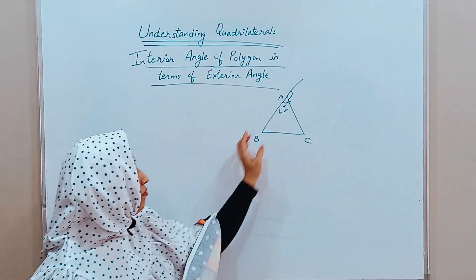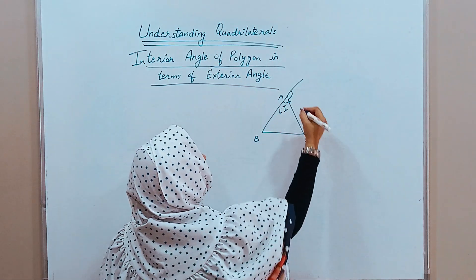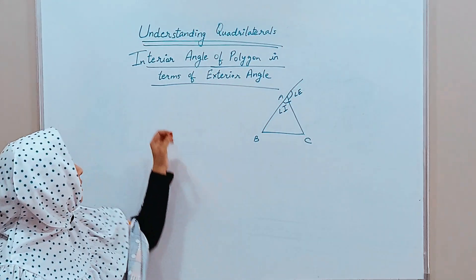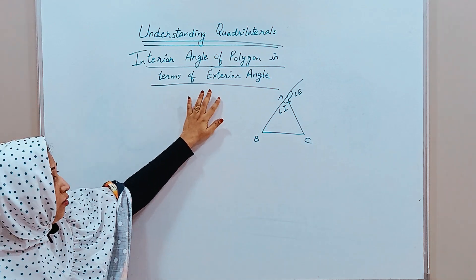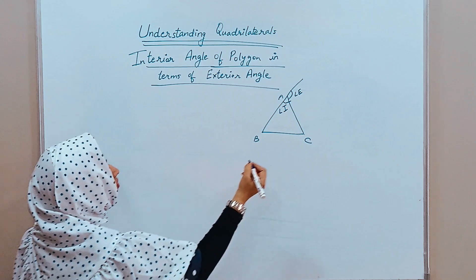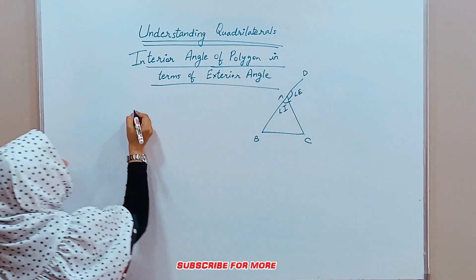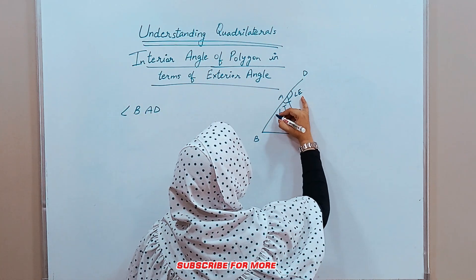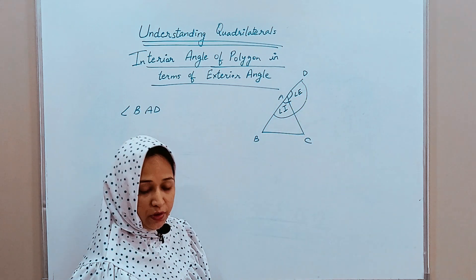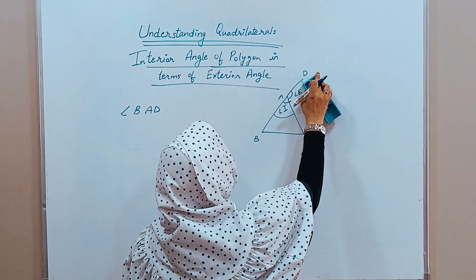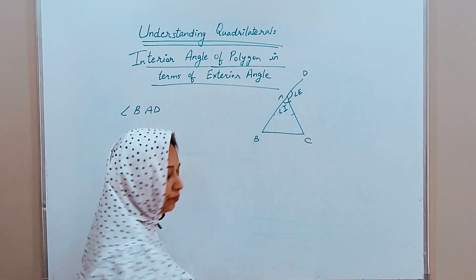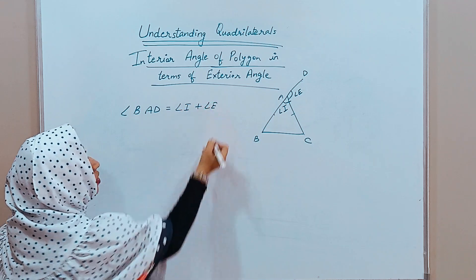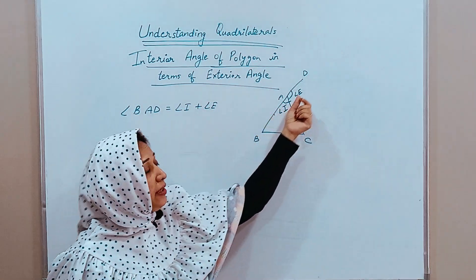An exterior angle is the one which is outside the polygon, touching the interior angle. Let us name it as angle E. Now, when we say interior angle in terms of exterior angle, we can see that we have a complete angle. Let me name this as D — angle BAD. Angle BAD is this complete angle, and it means it is the sum of angle I and angle E, so angle BAD equals angle I plus angle E.